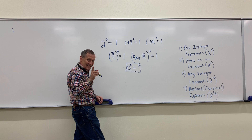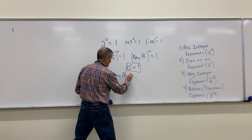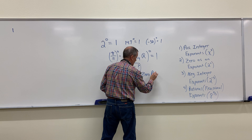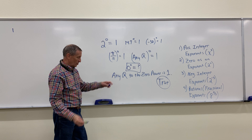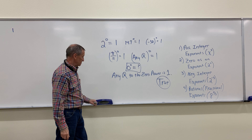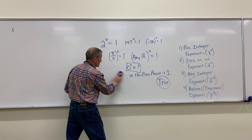But get this for your test: if you see the statement 'any real number to the zero power is one,' you're going to enter that as true. We're going to recognize that there's an exception, but we're going to treat any real number to the zero power as being one. So if I have any real number to the zero power, it's going to be one.